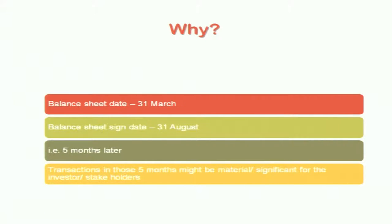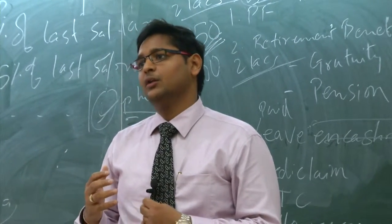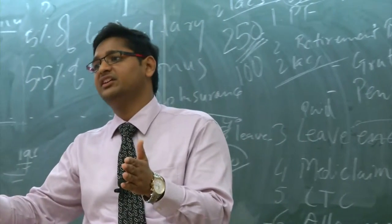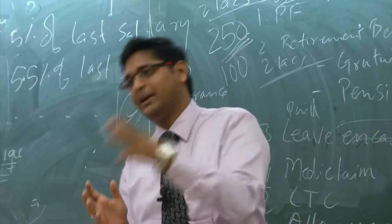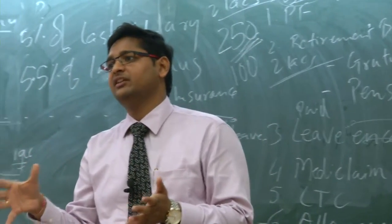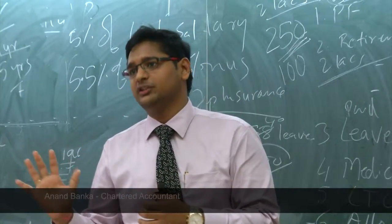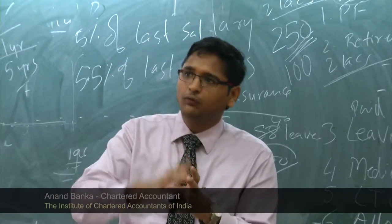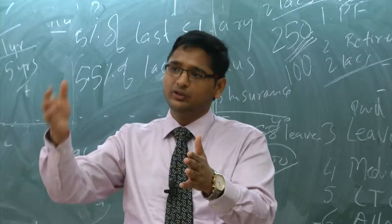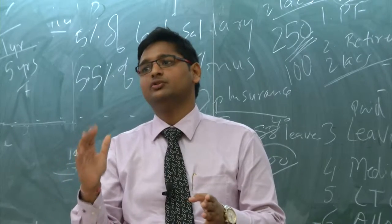Why do we need a standard on events occurring after the balance sheet date? The balance sheet is prepared up to 31st March but is signed somewhere later, maybe 1 to 3 months later. Suppose we sign the balance sheet in May - there is a 2-month gap between the balance sheet date and the signing date. There might be certain material events which occur between these two dates.